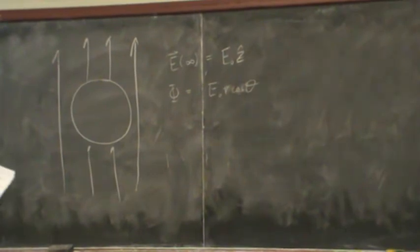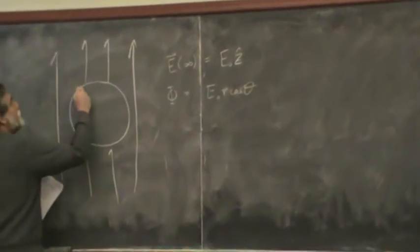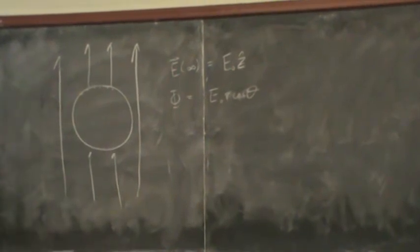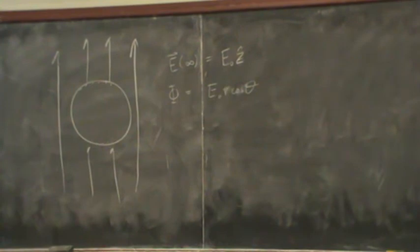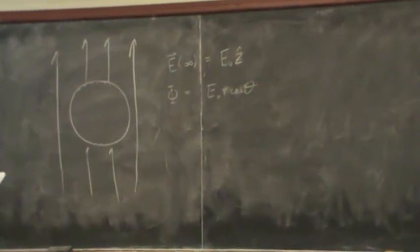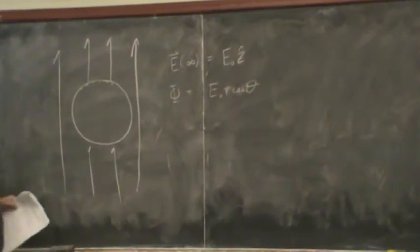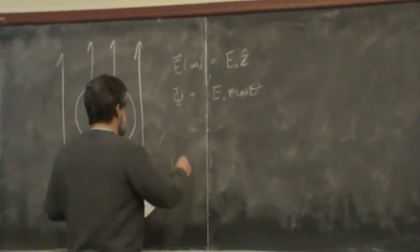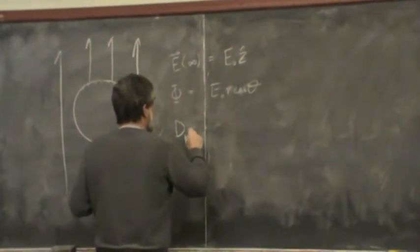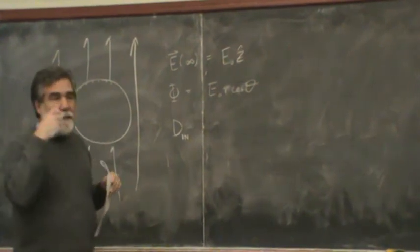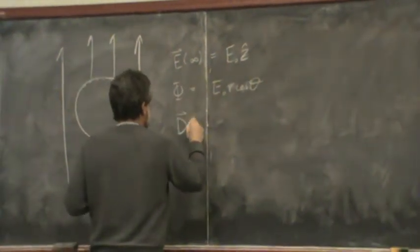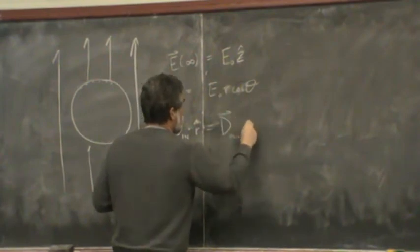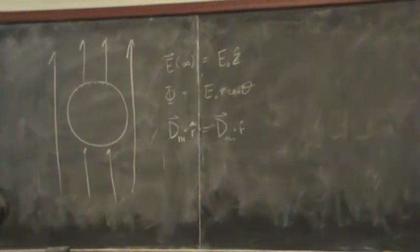But now we have to be a little bit more careful about our boundary conditions. What's going to happen here is that we're going to end up with a polarization of the material that's going to lead to bound charge. There is no free charge in this problem.